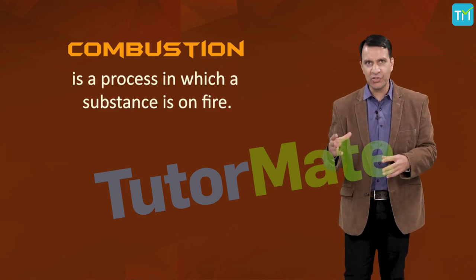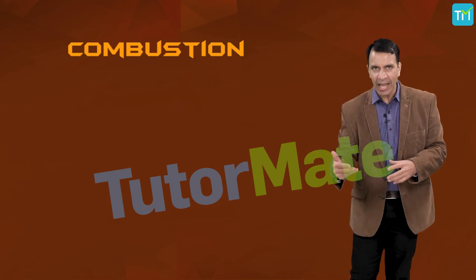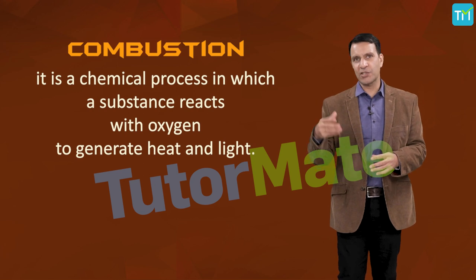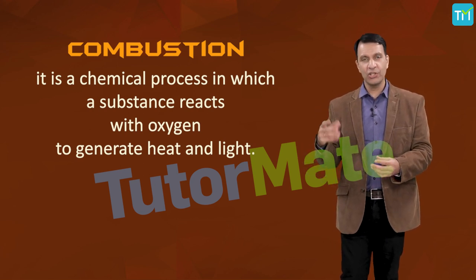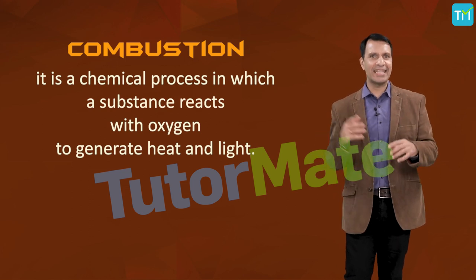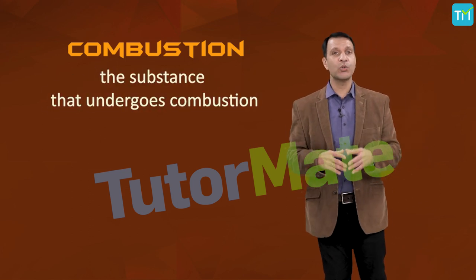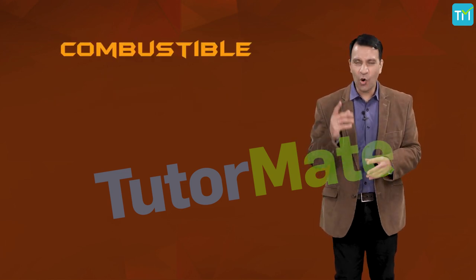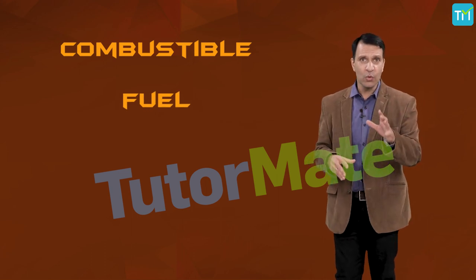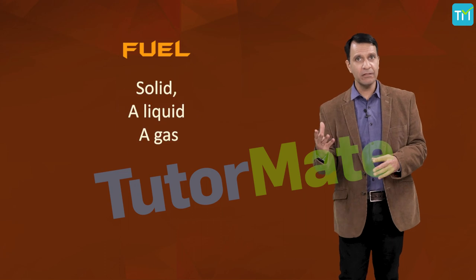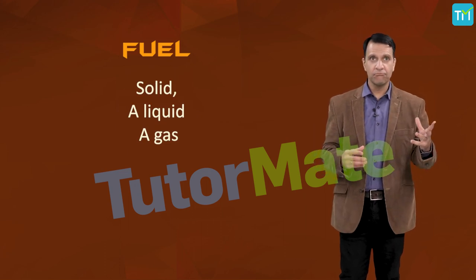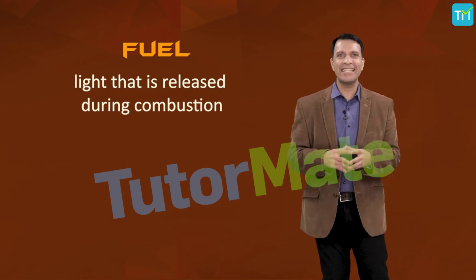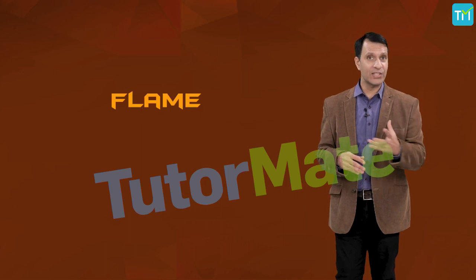To put it in the simplest words, combustion is a process in which a substance is on fire. But more precisely, combustion is a chemical process in which a substance reacts with oxygen to generate heat and light. The substance that undergoes combustion is said to be combustible and is called a fuel. This fuel can be in any form — solid, liquid, or gas — and the light released during combustion is either in the form of a flame or as a glow.